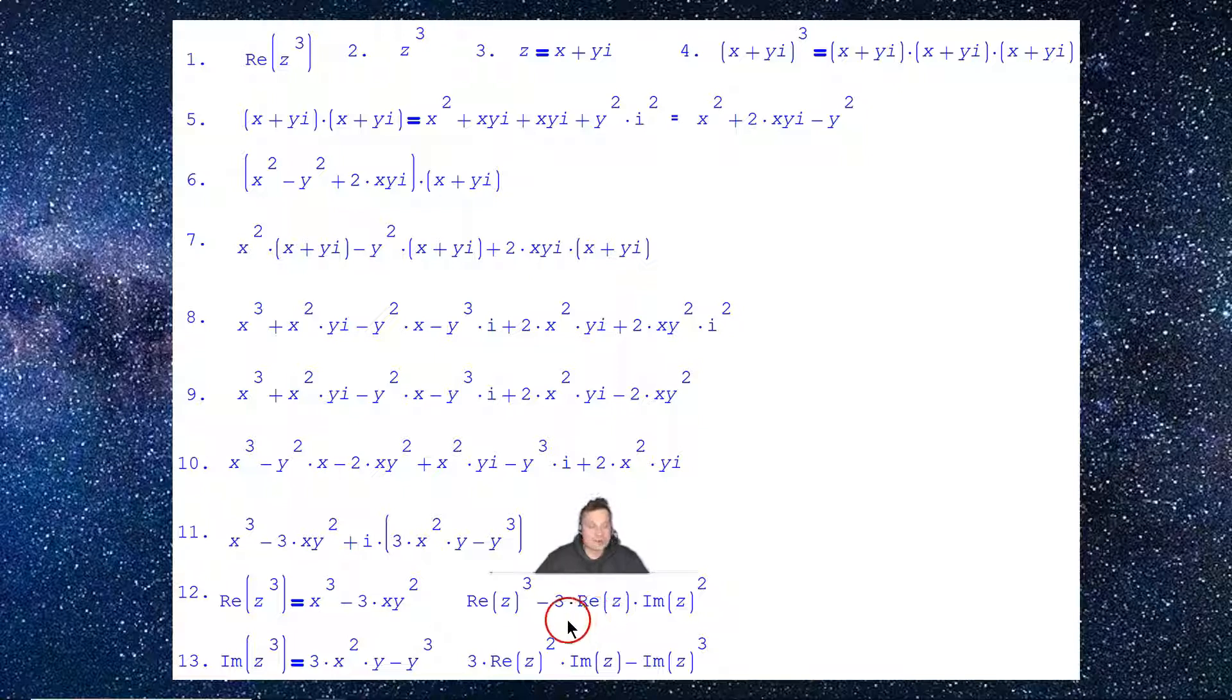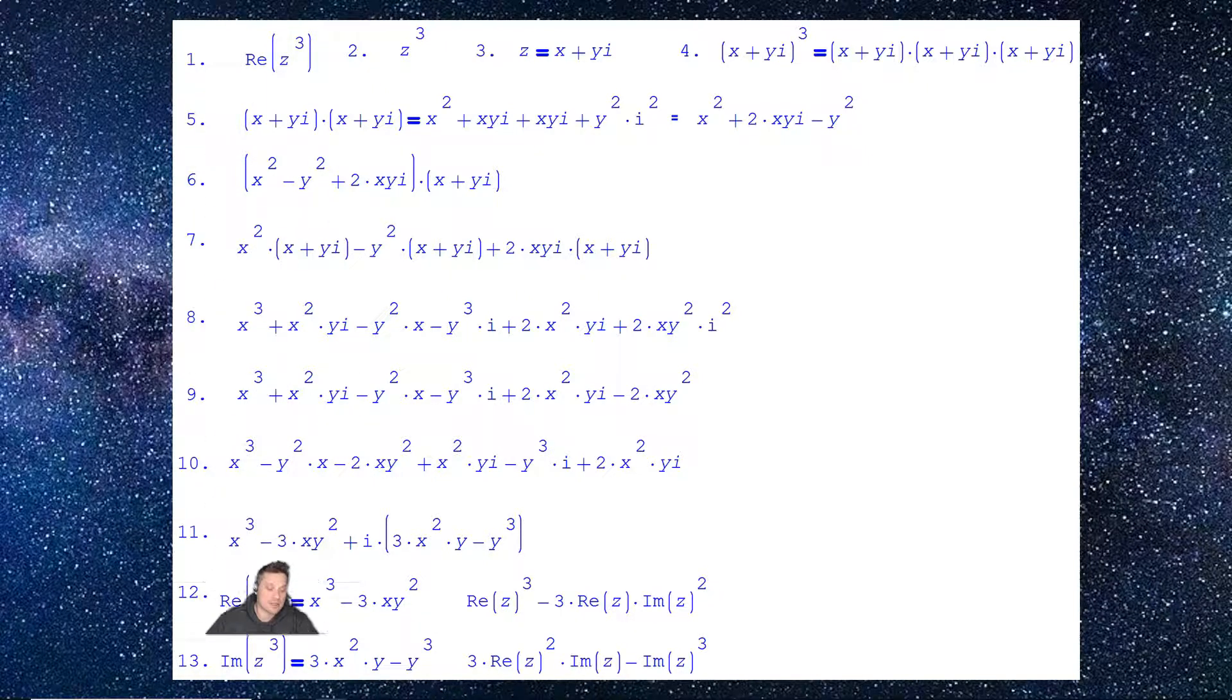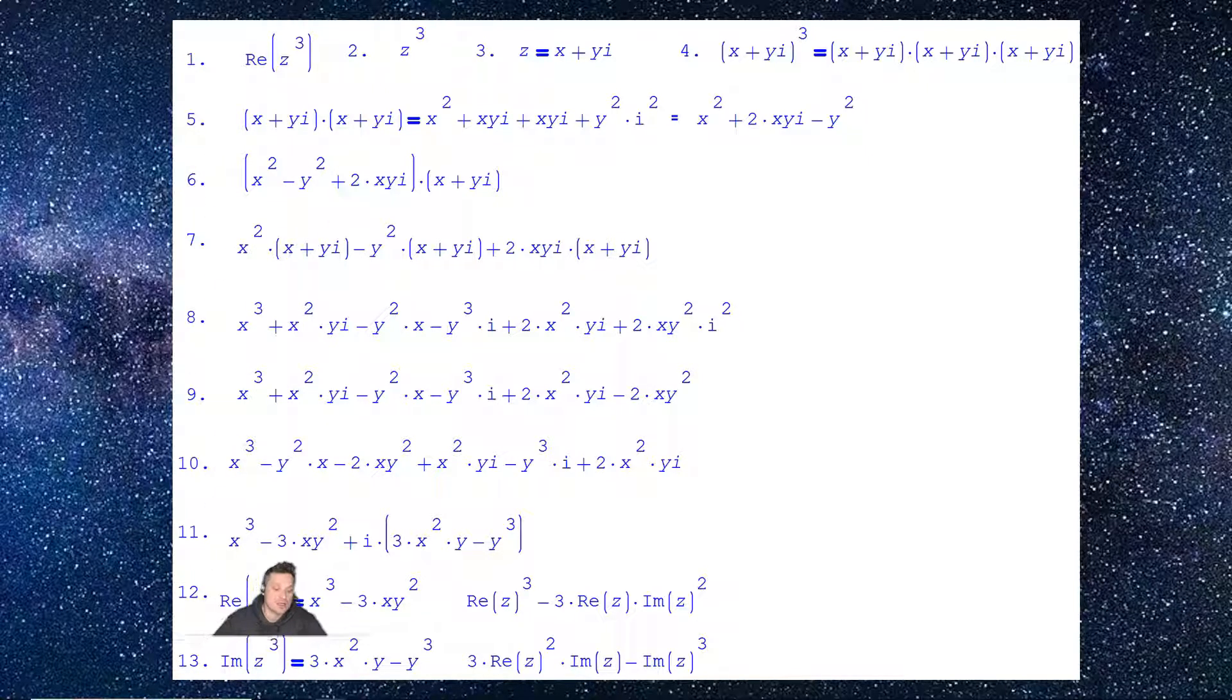And then we can also, based on this, find the imaginary part pretty easily. So remember that. Go back at step 1, I just said find the real part, but we can just as easily find the imaginary part. So go all the way to the bottom. At step 13, I have imaginary part of z cubed is just 3x squared y minus y cubed. That's just coming from the expression above my head because it's the expression with the i.